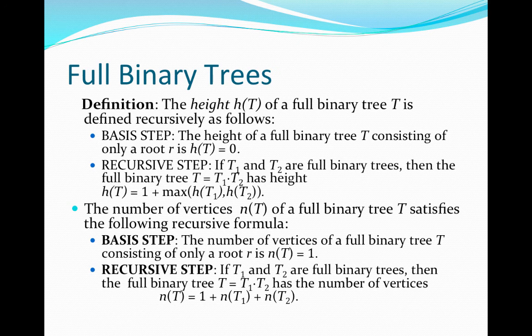Now let's look at the number of vertices of a full binary tree T. Again, we begin by defining the number of vertices according to the tree formed at the basis step. For the full binary tree consisting of only a root, we define the number of vertices to be 1, since the total number of vertices of a tree consisting of a root is simply 1 vertex — the root.